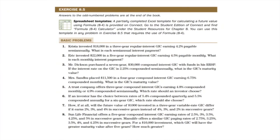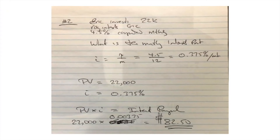In problem two, we're again asked to calculate the monthly interest payment — basically the same as the first problem. The present value is $22,000. The payable interest is 4.5% annual payable monthly, so we take 4.5% divided by 12, which gives us 0.375% per month. To calculate the interest payment, we take PV × i = $22,000 × 0.00375, which comes to $82.50.